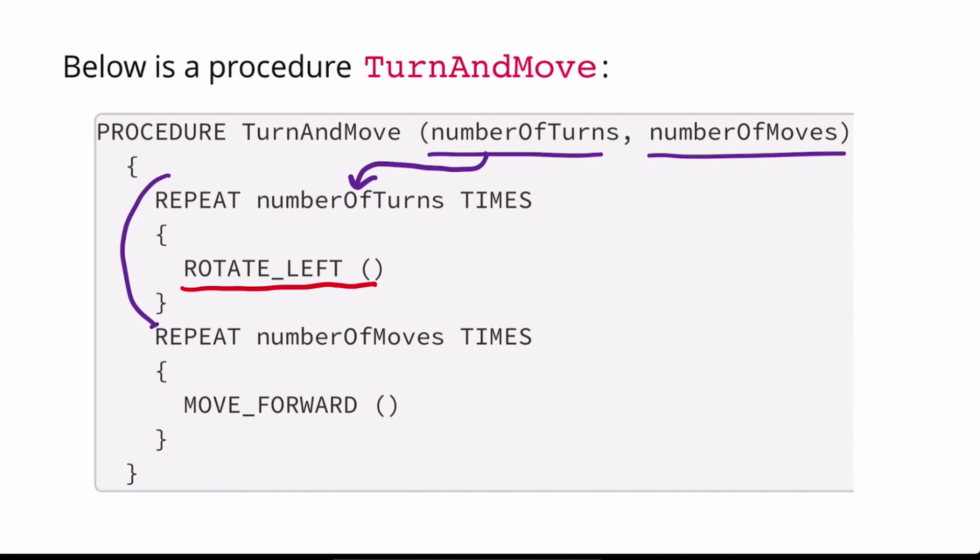Next, we go on to the next block of code, repeat number of moves times. And we take whatever was input in number of moves, and we repeat move forward that many times.